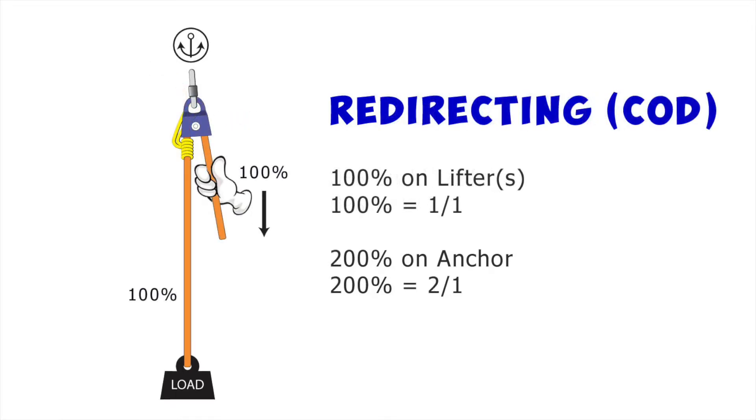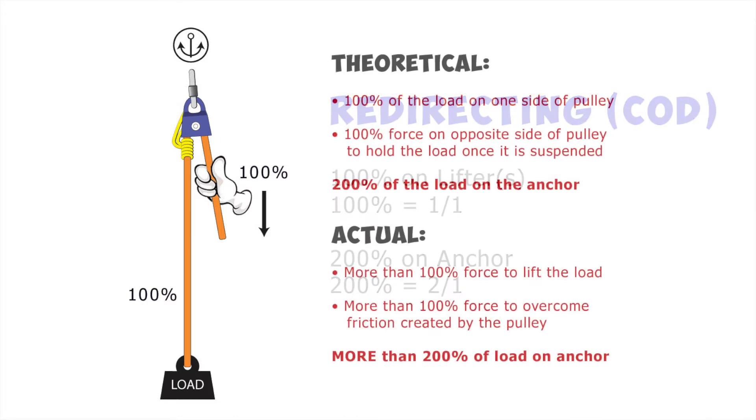Redirecting the rope through a pulley at the anchor will allow me to pull down instead of up. Because the pulley in this example is stationary and not moving, it is providing a change of direction only, abbreviated as COD. Look what happens to the load now. While I am hauling, 100% of the load will be on me and the anchor will need to hold 200% of the load. It is important to note that the numbers I am quoting refer to theoretical mechanical advantage only. They do not address friction.